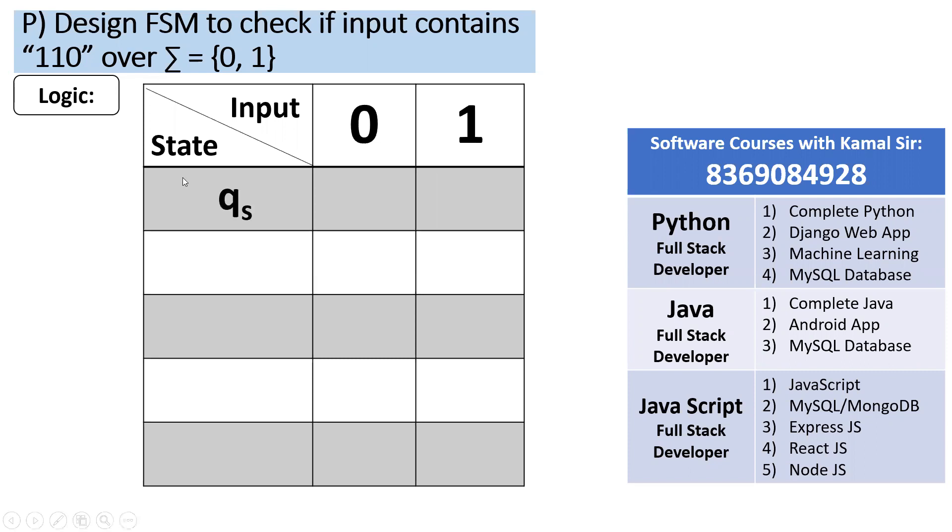Qs is the start state. Q0 ends in 0, Q1 ends in 1. Your sequence is 110. Looking at this, we'll make 3 questions: 1, 2, 3. First question is ends in 1, which is already there. Second will be ends in 11, and third will be ends in 110.